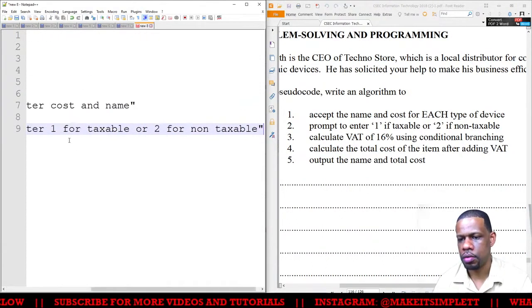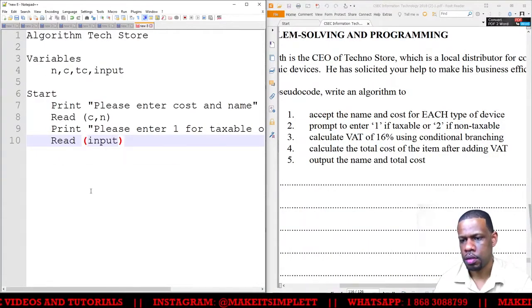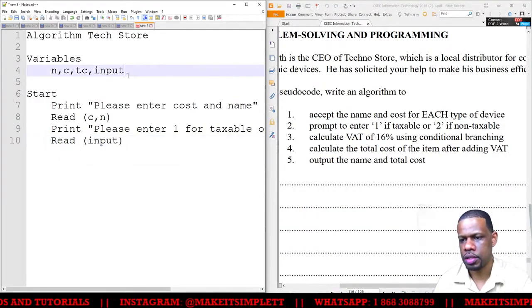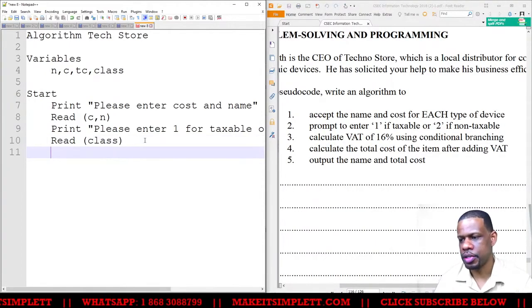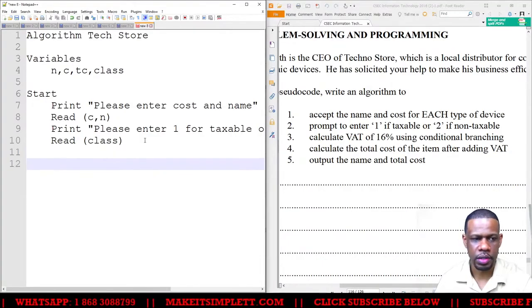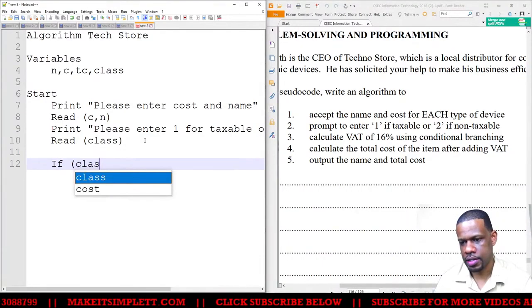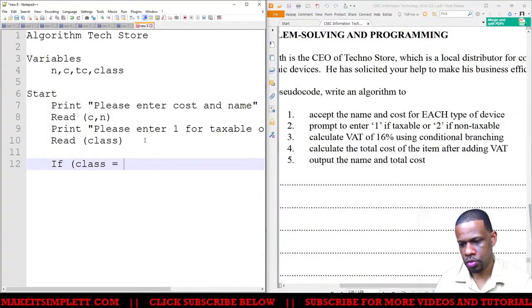And then I'm going to now have to read it - read input. I'm going to change it from input to classification. So if it is taxable, I want to put a VAT of 16%. If it's not taxable... If class (classification) is equal to 1, then I want to calculate tax.